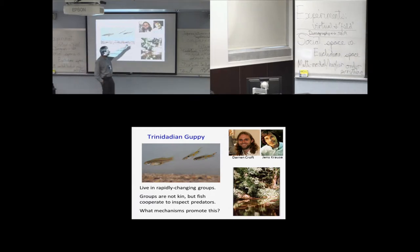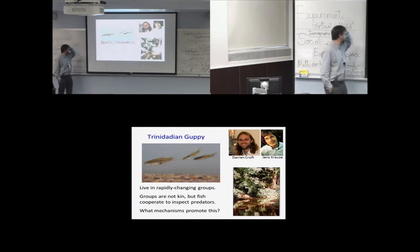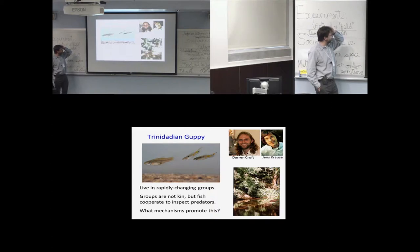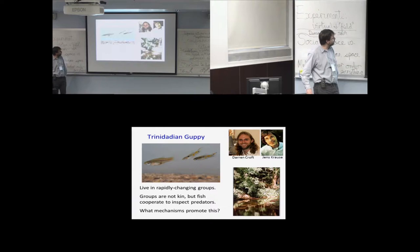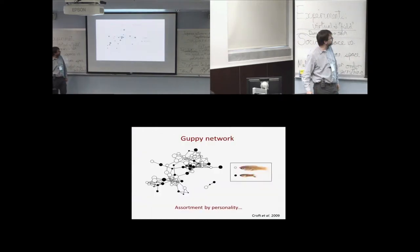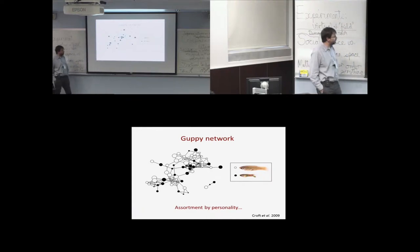So these are the two reprobates that got me into this business, really. Both of them need a haircut. And what they were interested in was these beautiful little fish that Darren's already told you about that live in a truly fluid social system. Darren's interested in can we get to the bottom of the mechanisms that promote these things being prepared to risk their lives, apparently, to go and inspect a predator with someone they're not related to. That's a cool thing to want to know. So we constructed these networks for guppies and look for things like whether or not these networks were sorted by personality types.